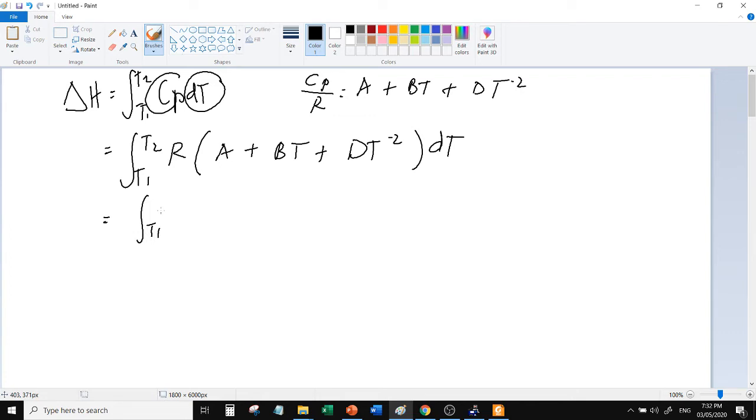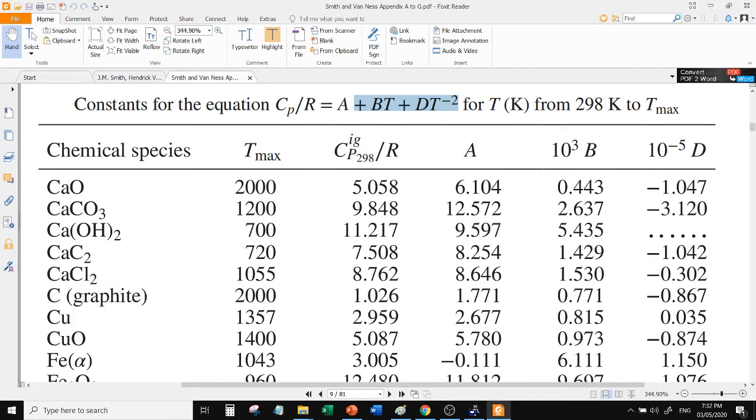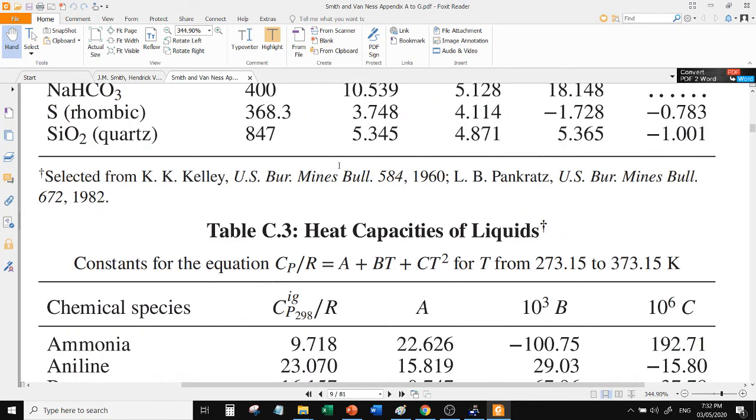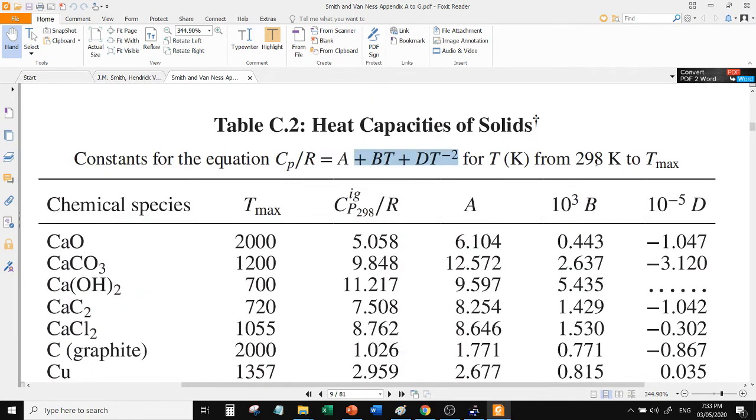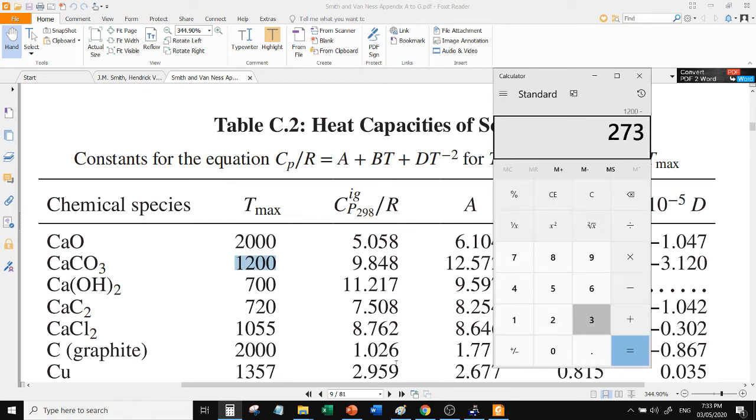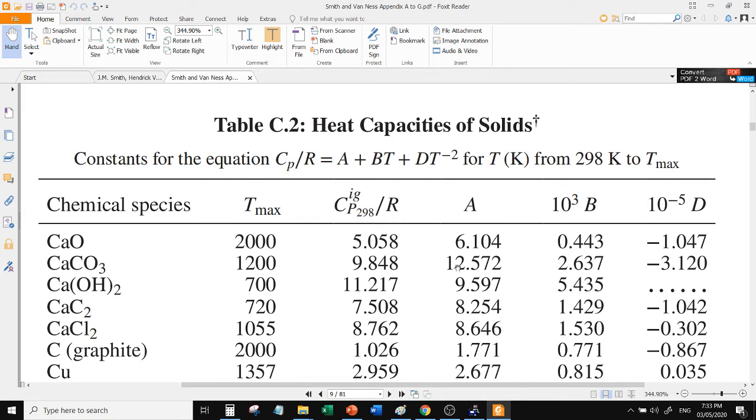We just transposed R to the other side of the equation so it becomes just CP. The R we will use now, let's see first what it says here if there's anything. Does it say what R to use? Seems like nothing, but the temperature used should be in Kelvin and it's only applicable up to Tmax. Let's see what the Tmax of calcium carbonate is: 1200. Good thing the given in the problem is 880 degrees Celsius. It's in Kelvin. We'll subtract. We can still use the equation for this.